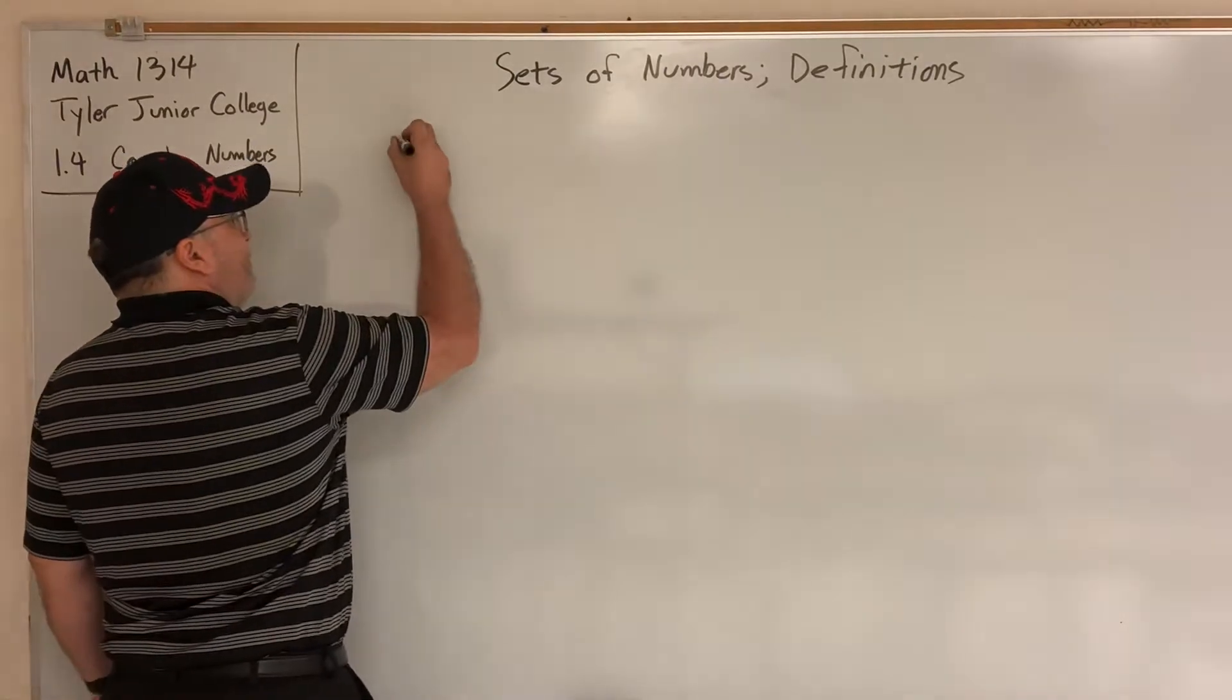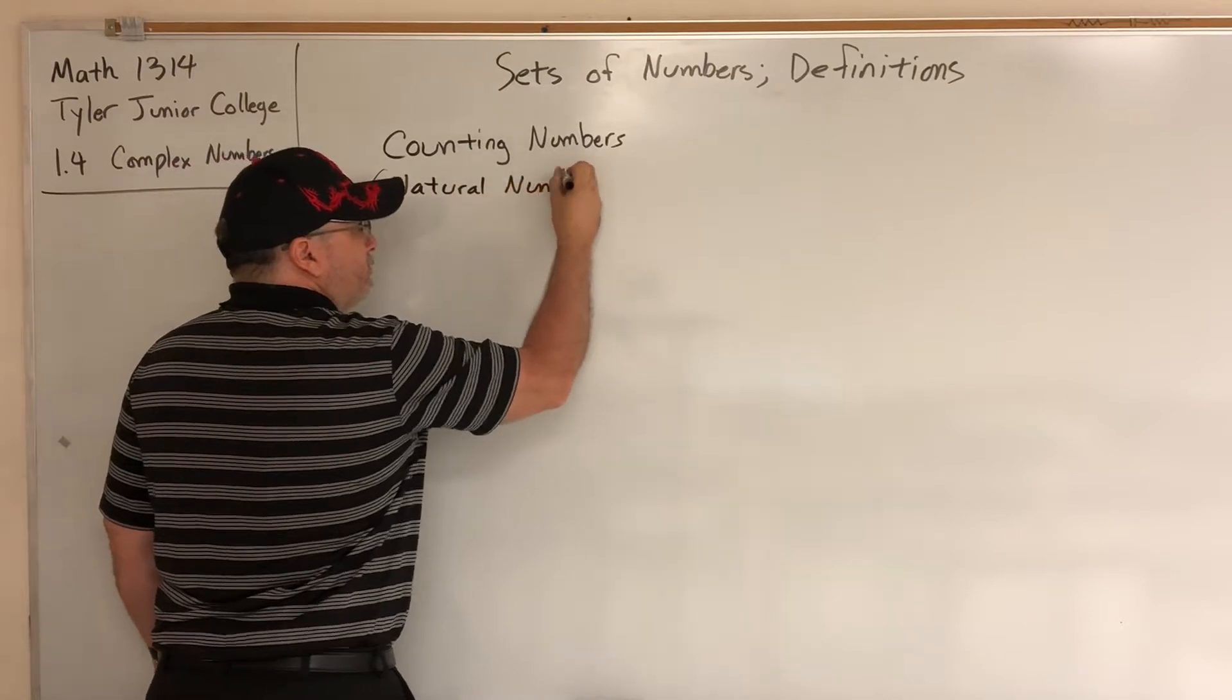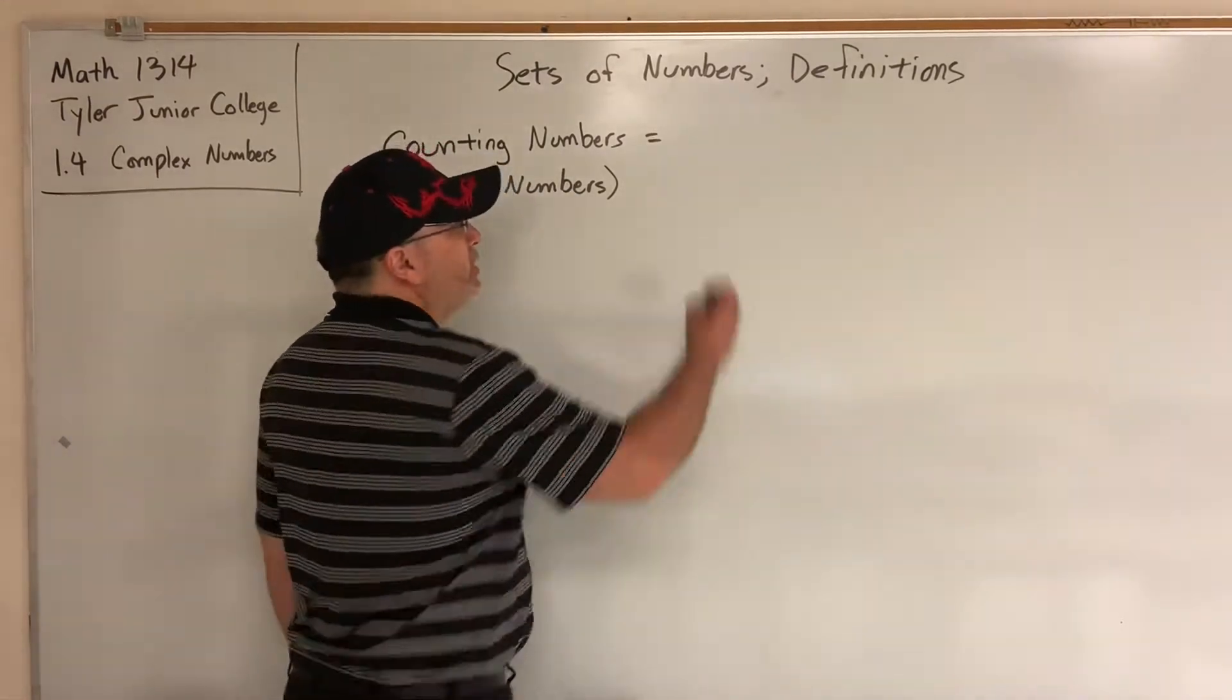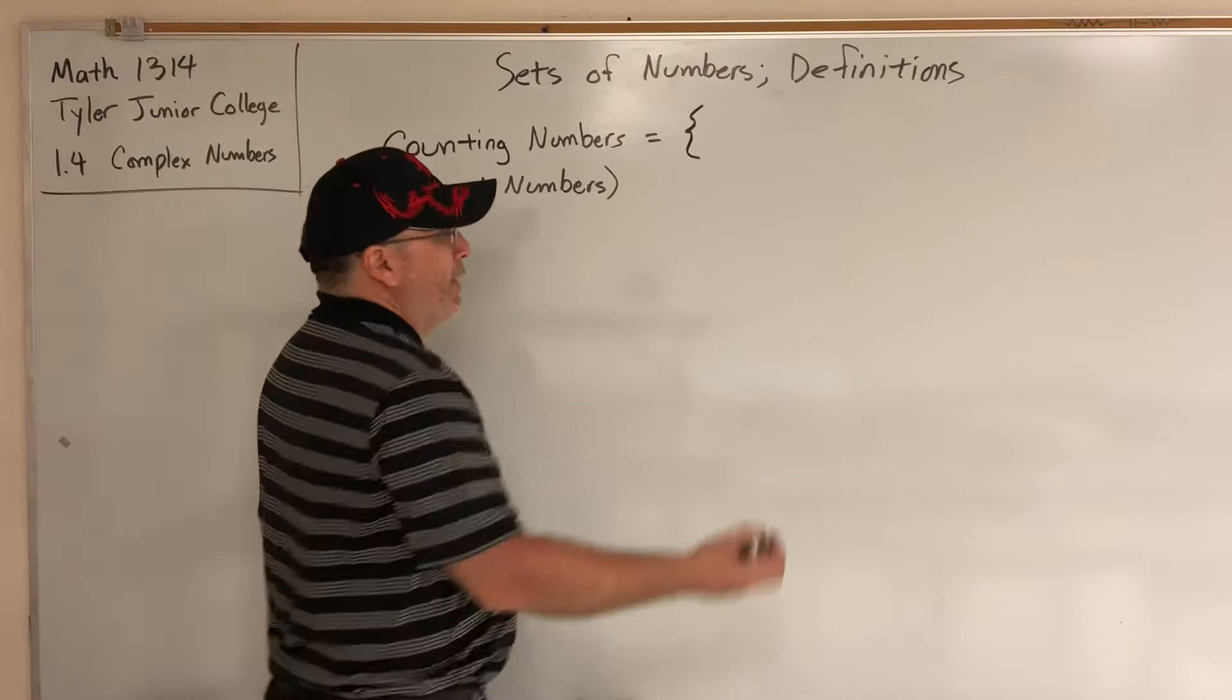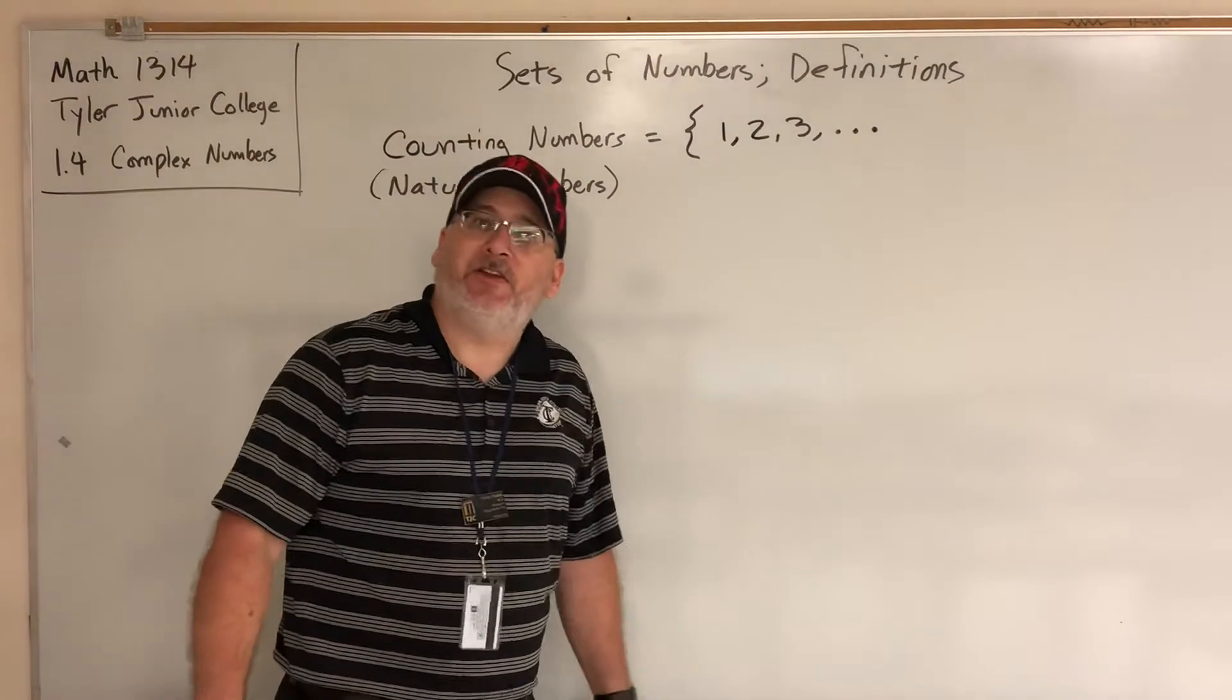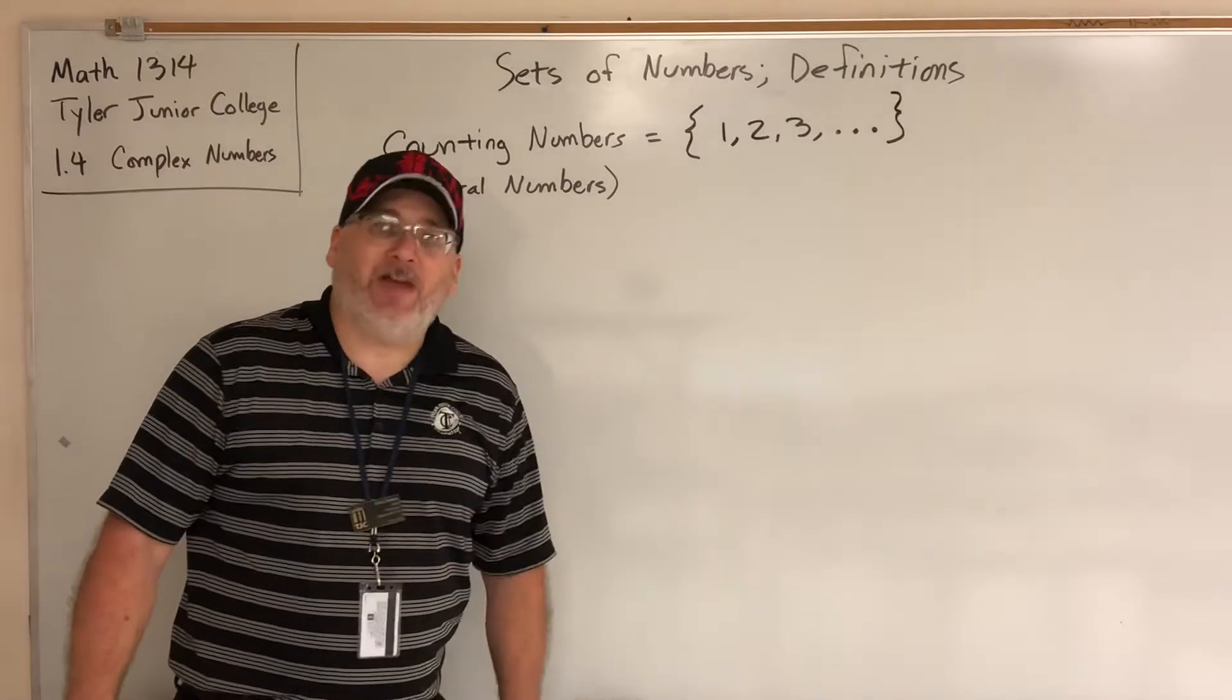The first set of numbers you need to be familiar with are the counting numbers. The counting numbers are also known as the natural numbers, but we usually call them the counting numbers because they're the numbers that you count with when you first learn to start counting. Typically, when we represent a set, a collection of objects, we represent it inside a set of braces. If I wanted to list the counting numbers, I would just start counting: 1, 2, 3. These three dots, which are called ellipses, means that this pattern continues until I tell it to stop, or it continues forever if I don't tell it to stop.